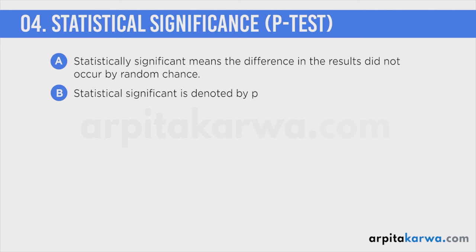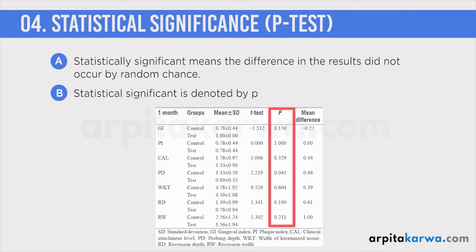P here stands for probability, and I calculate the statistical significance. At times when you read a research paper you are going to come across terms like P equals 0.05 or alpha equals 0.05. This is basically the statistical significance.